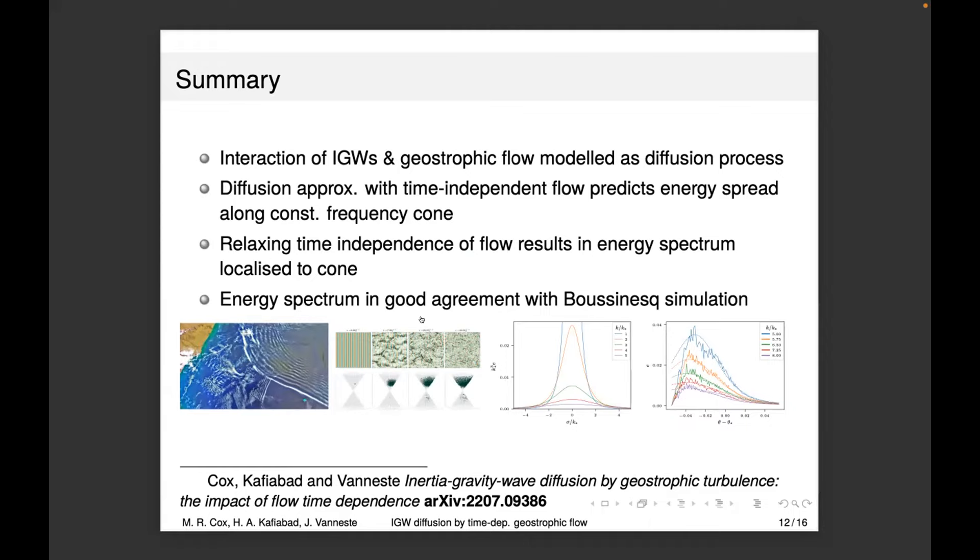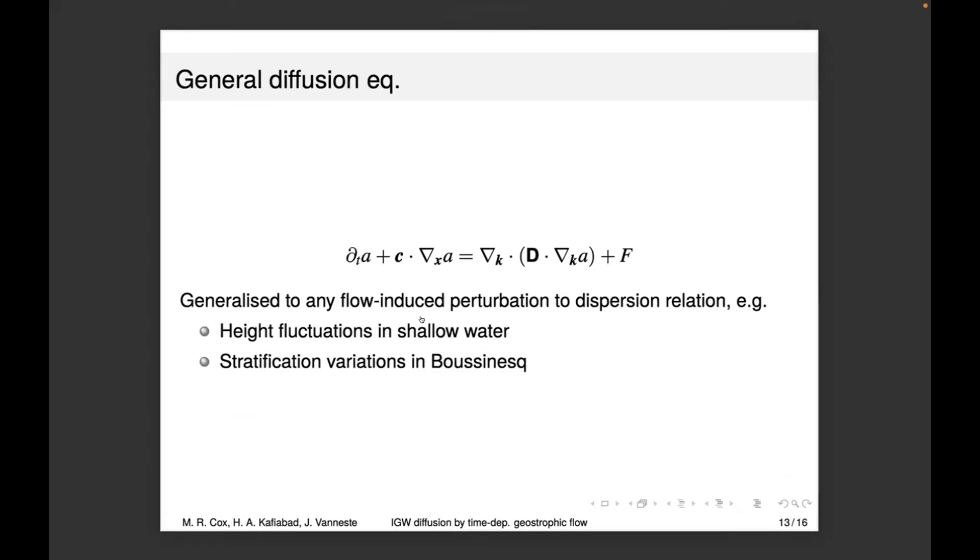I think I've got time. What I've been doing since then is looking at how the diffusivity comes from the Doppler shift term in the dispersion relation. But you could have a general diffusivity that incorporates other flow-induced effects. The ones we've been looking at are height fluctuations induced from the geostrophic flow in the shallow water case, and stratification variations in the Boussinesq case.